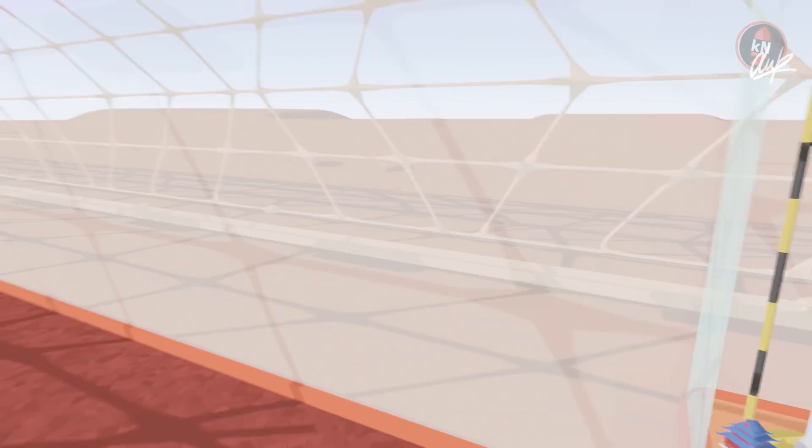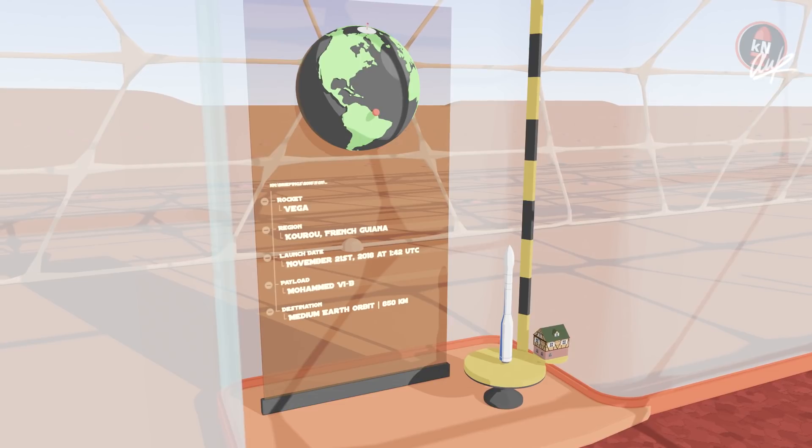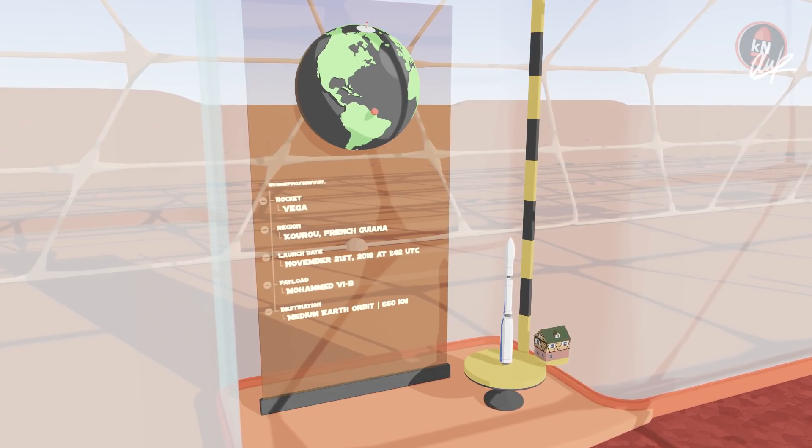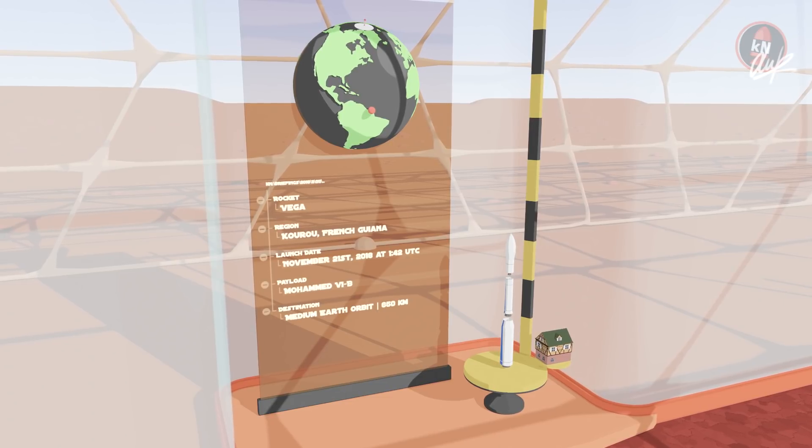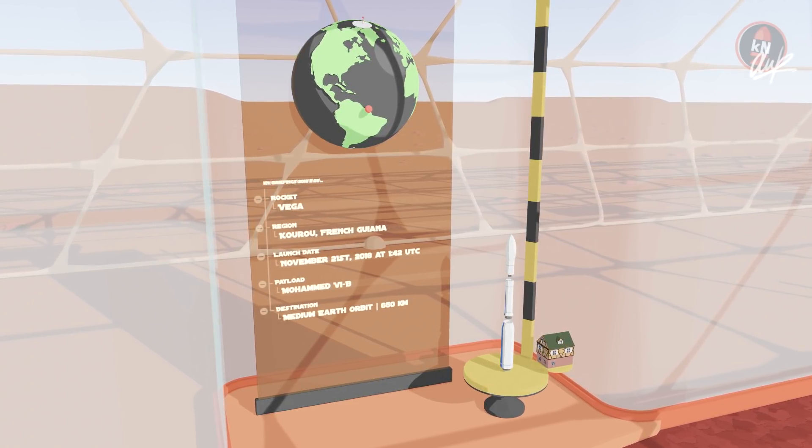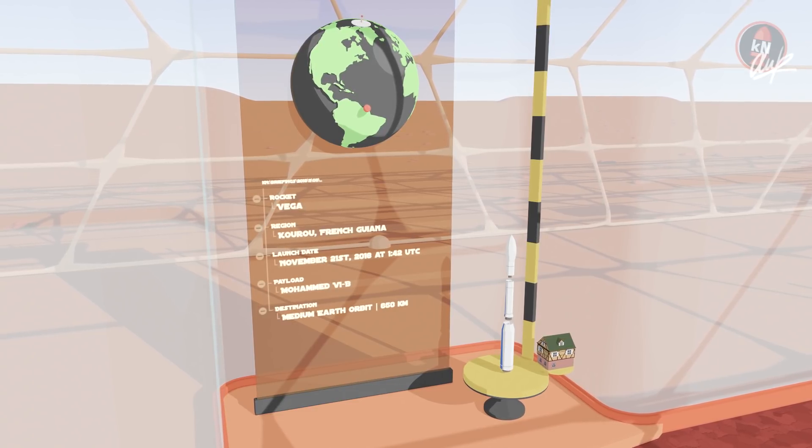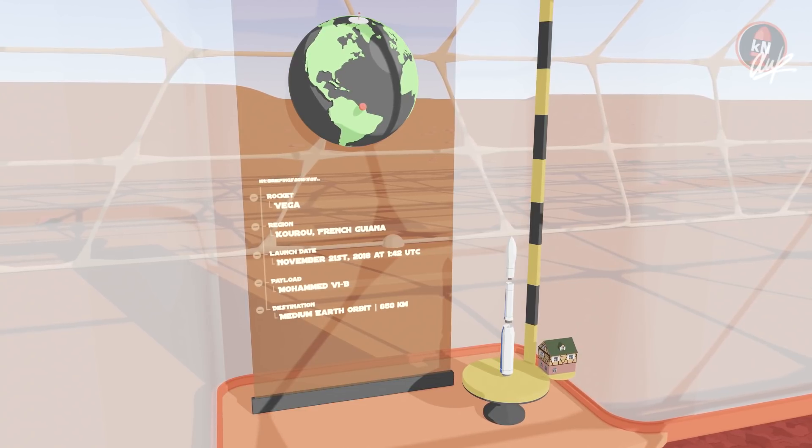Next up was another small launch vehicle, the European Vega launching of Kourou. The payload behind the fairing is Mohamed 6B, the second one for Morocco. It weighs about a ton and is equipped with all kinds of sensory instruments to monitor the ground from its polar orbit. Vega itself is a relatively simple rocket, built to be cheap and the lightest launcher of Ariane space.